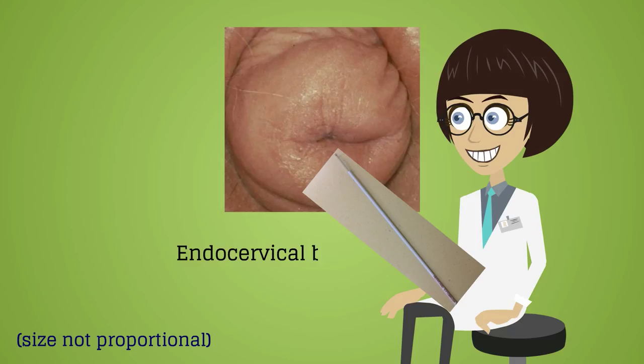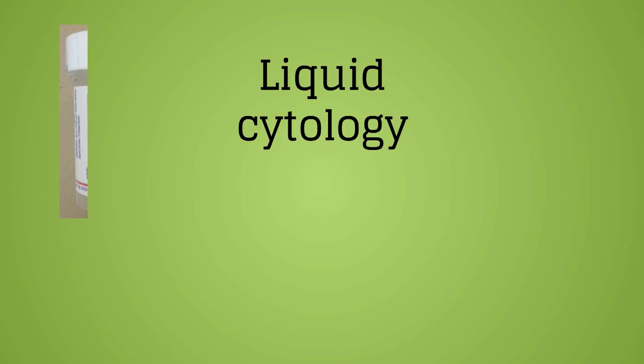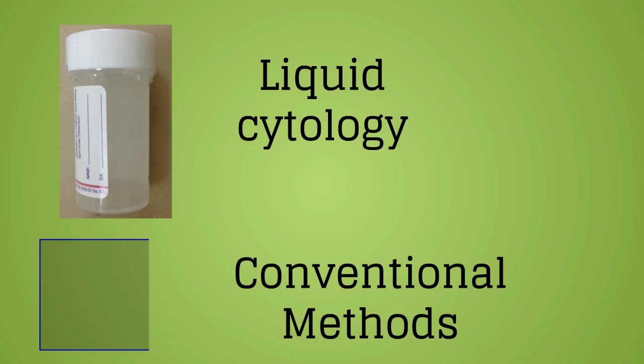There are two different techniques for pap processing. If liquid cytology techniques are used, the cells will be collected in a liquid preservative. If conventional methods are used, the cells will be transferred directly to a slide. The cell samples will be stained in a laboratory and read by a pathologist for changes associated with cervical dysplasia or cervical cancer.